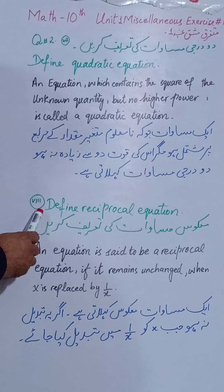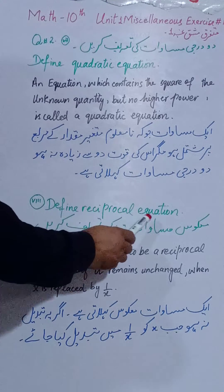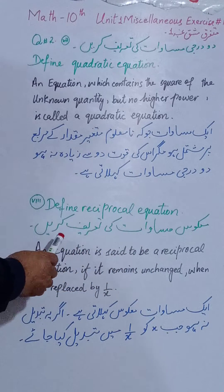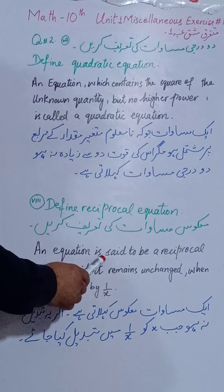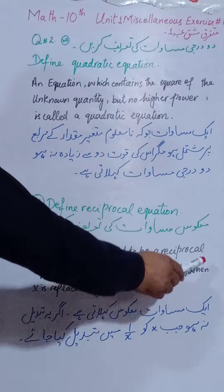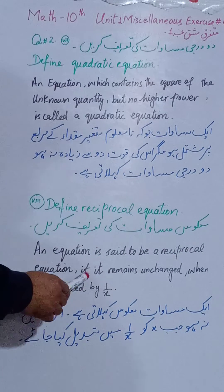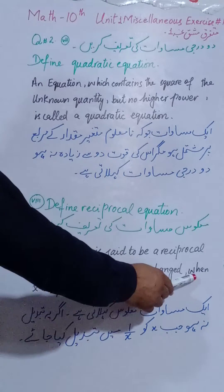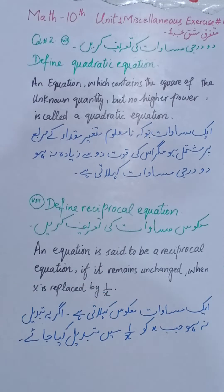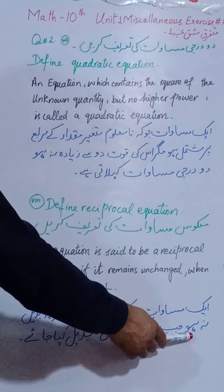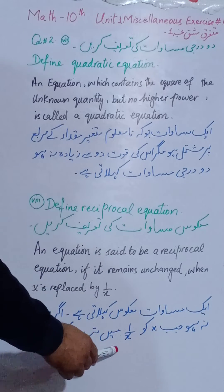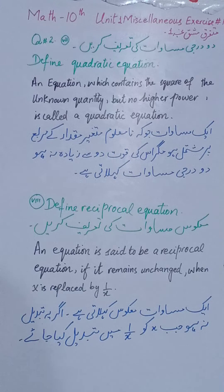8th Part — Define Reciprocal Equation: معقوض مساوات کی تعریف کریں۔ An equation is said to be a reciprocal equation if it remains unchanged when x is replaced by one over x. ایک مساوات معقوض کہلاتی ہے اگر یہ تبدیل نہ ہو جب x کو ایک بٹے x میں بدل دیا جائے۔